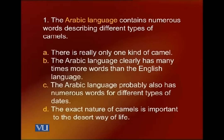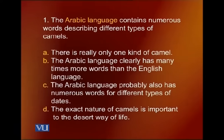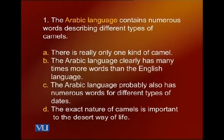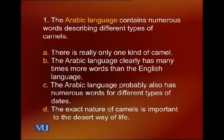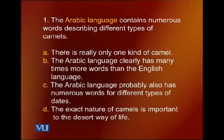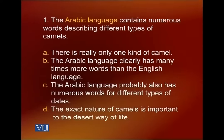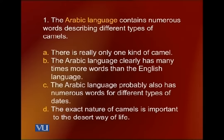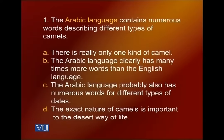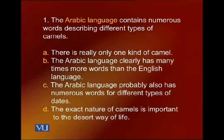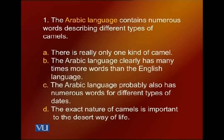The choices are: A — there is really only one kind of camel but they use different words; B — the Arabic language clearly has many more words than the English language; C — the Arabic language probably also has numerous words for different types of dates; D — the exact nature of camels is important to the desert way of life.